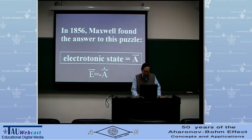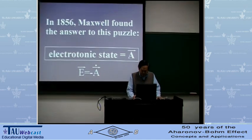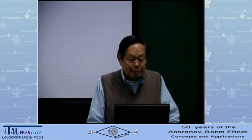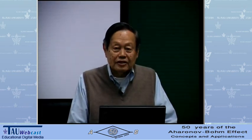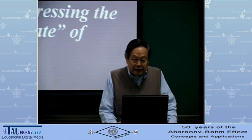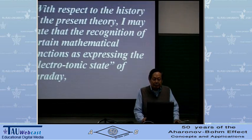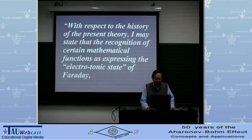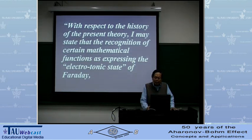The answer was that the electrotonic state was the vector potential. In modern notation, we would write E equal to minus A-dot. He published this in paper one. He was 26 years old. He knew he had landed on something important, and that it might lead to disputes about credit — he was very well aware of this. So at the end of the paper, he included a careful paragraph.